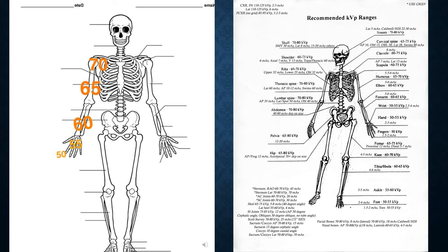If you look at the tib-fib, it shows around 60 to 65 KVP with 4 to 6 mAs. If you go up to the femur, you would use more mAs — not less. This shows 65 to 75 KVP, which is a small increase in KVP, but mAs goes up to 12 for the proximal and 5 to 7 for the distal. As the body part increases in size, your KVP and mAs increase. As you get more proximal, the technique goes up.